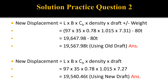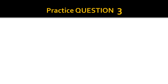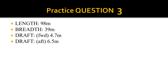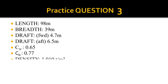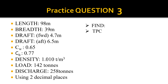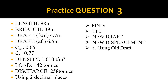Our next example is a combination of both loading and discharge. We are given values including density, and the vessel is discharging 258 tons. We are again required to find TPC, new draft, and new displacement using both old draft and new draft methods.